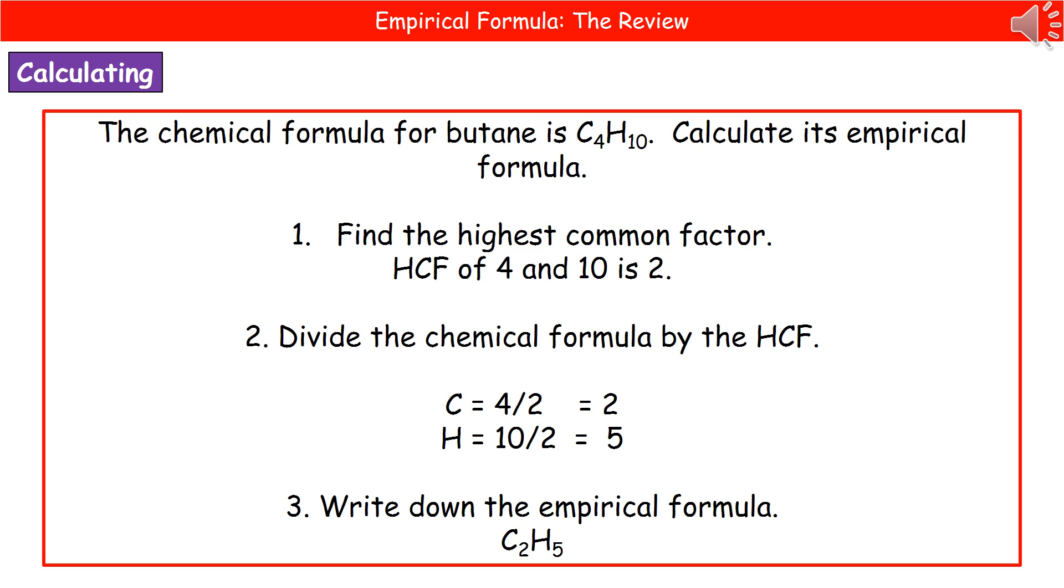So the first step is we need to find the highest common factor. And if we have a look at it, carbon is obviously 4, hydrogen is 10, so the highest common factor of 4 and 10 is 2. Hopefully we know that from our maths lessons.